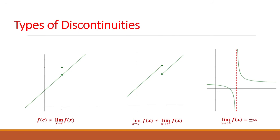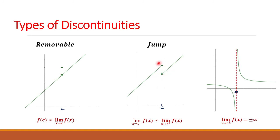This graph shows examples of the types of discontinuities. For the first graph, this shows a removable discontinuity — the limit exists and is not equal to f of c. The second shows a jump discontinuity, where there is a gap at x equals c, meaning the left-hand limit is not equal to the right-hand limit. For the infinite discontinuity, we can see a vertical asymptote.